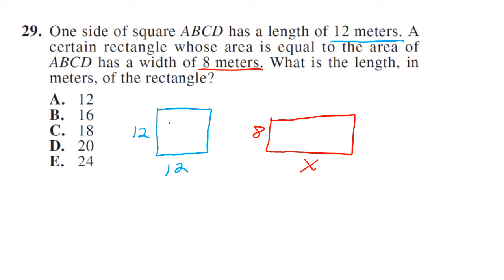But we know their areas are equal. So 12 times 12 is 144. That means this one has the same area, so 8x equals 144. Divide both sides by 8, x equals 18. So your answer is C.